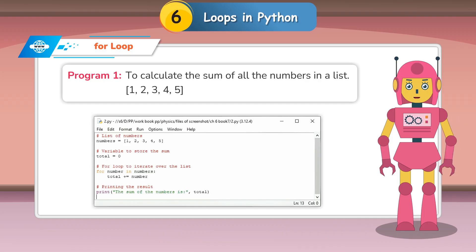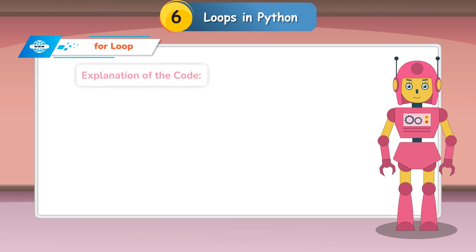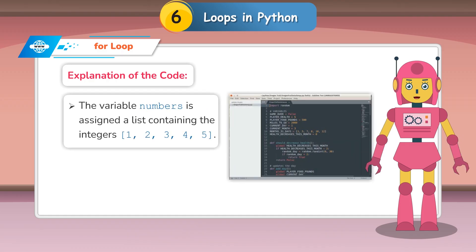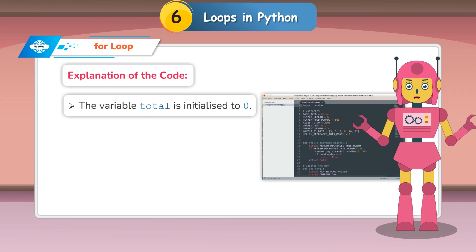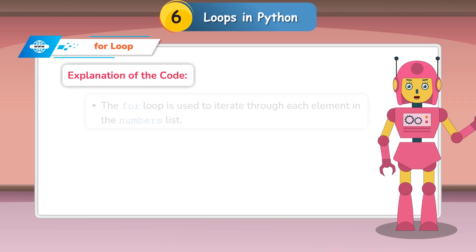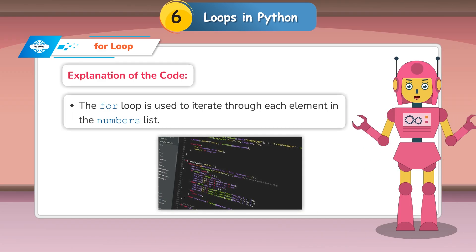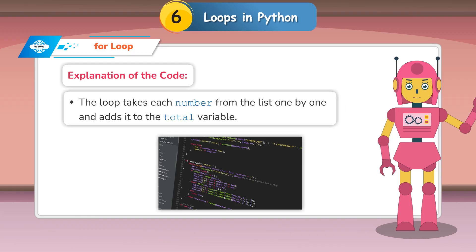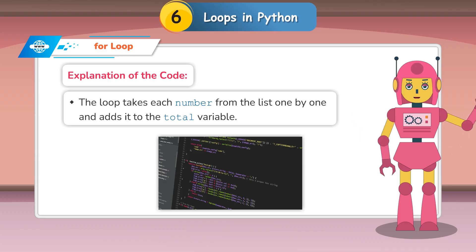Program 1: To calculate the sum of all the numbers in a list [1, 2, 3, 4, 5]. The variable 'numbers' is assigned a list containing the integers 1 through 5. The variable 'total' is initialized to 0. The for loop iterates through each element in the numbers list, taking each number one by one and adding it to the total variable.